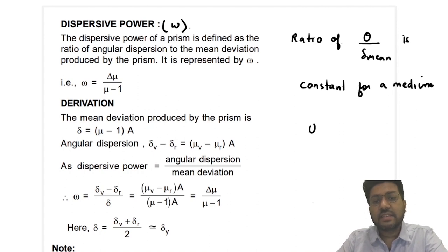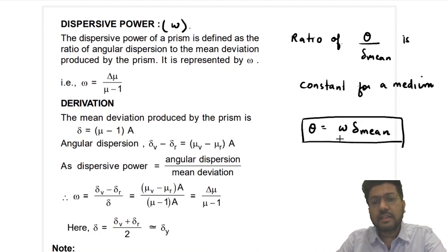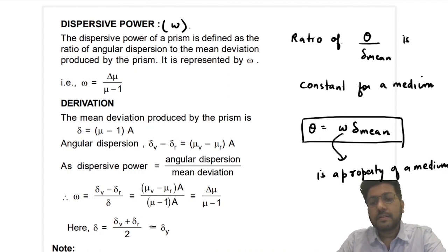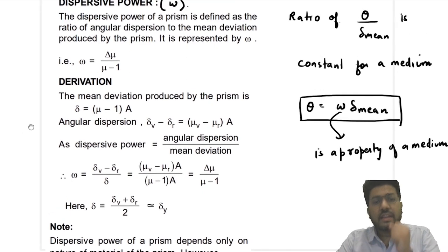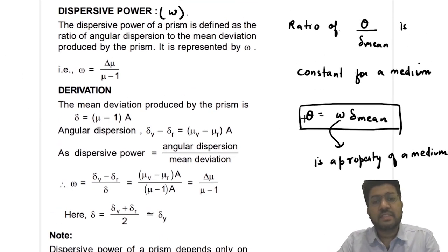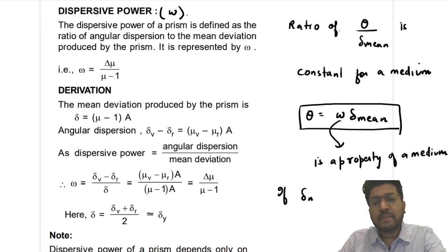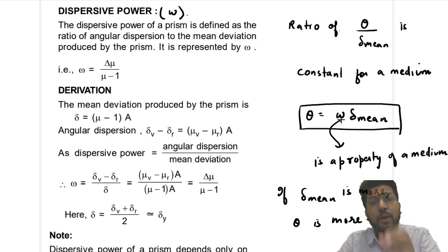You can say θ = ω·δ_mean. Omega is a property of a medium — the dispersive power is a property of a medium. So ω = θ/δ_mean. That means if mean deviation is more, then angular dispersion is also more, because they are directly related. Omega is a property of a material; it does not depend on the light.